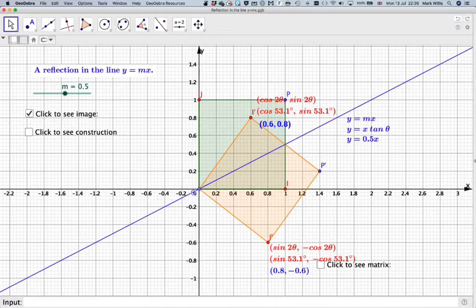Now if we add some lines of construction, we've dropped down this here. We have a right angle triangle here. Now this angle here will be tan of the angle. At the moment the angle is set to 26.6 for this value of m.